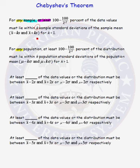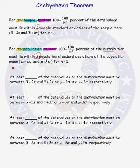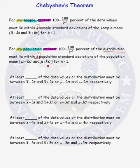This theorem also says that for any population, at least 100 minus 100 over k squared percent of the distribution must lie within k population standard deviations of the population mean. Again, this is true for any k greater than 1. The interval is the population mean minus k times the population standard deviation, and the population mean plus k times the population standard deviation.